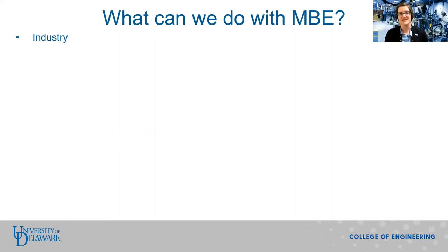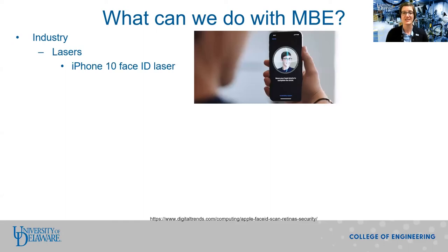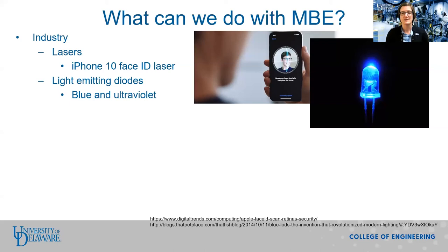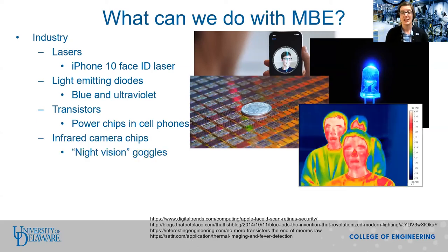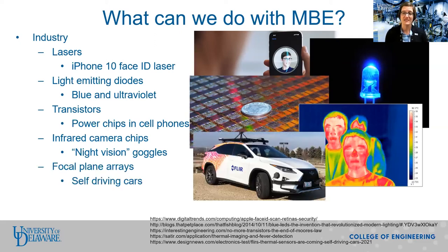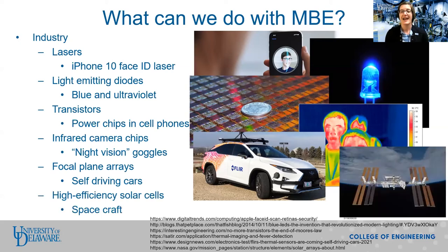It might seem that MBE is a technique used by only some niche research labs. However, MBE is actually an industrially relevant technique, and MBE-grown structures can be mass-produced. Some of the things made by MBE include lasers like the one in the iPhone X Face ID, light-emitting diodes especially in blue and ultraviolet colors, transistors primarily used for power chips in cell phones, infrared camera chips like those in night vision goggles, focal plane arrays currently used in self-driving cars, and high-efficiency solar cells used on spacecraft.